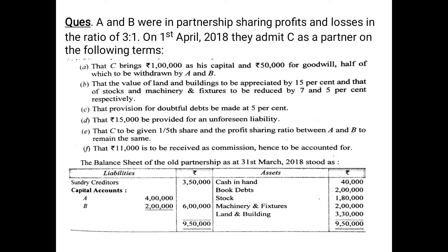The second condition: the value of land and building is to be appreciated by 15%, meaning increased by 15%. Land and building is an asset, and any increase in asset is shown on the credit side of the revaluation account. The value of land and building is Rs 3,30,000, so we calculate 15% of 3,30,000 and show the increased value on the credit side.